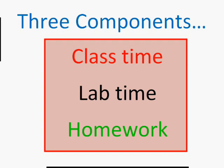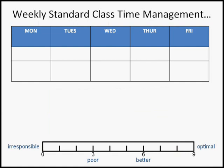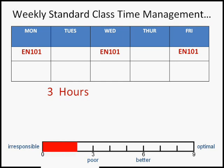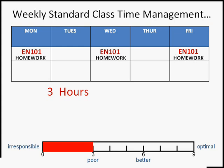Let me show you exactly why that's the case. Let's look at the standard class time management for a standard class — let's say English 101. Your English 101 class goes three times a week; it's a three-credit course Monday, Wednesday, and Friday. That means you spend three hours in class. After each class you're going to have writing to do, so you'll have homework — at least an hour of homework every day, so three additional hours for a total of six hours that week.